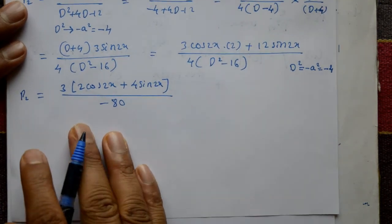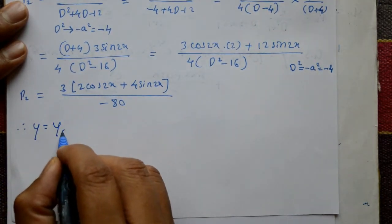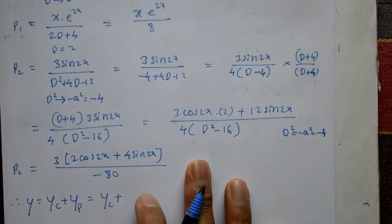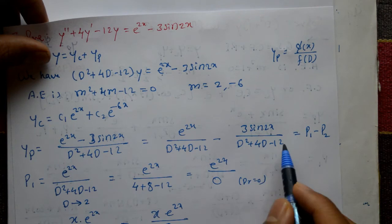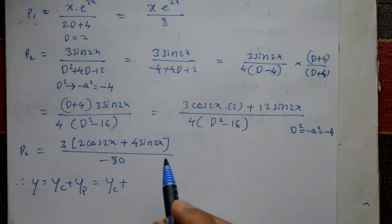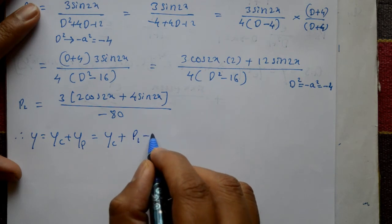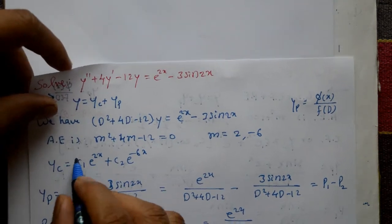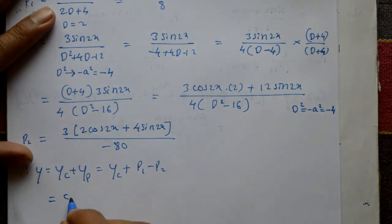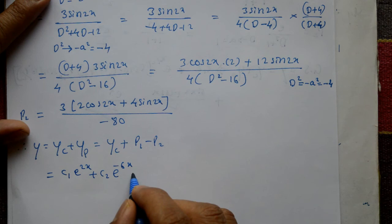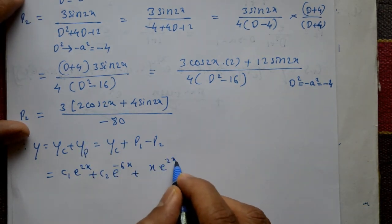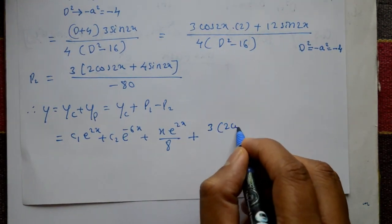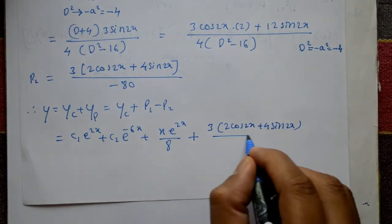Therefore, the complete solution is y = complementary function + particular integral. The particular integral is P1 - P2. So the complete solution is: y = C₁·e^(2x) + C₂·e^(-6x) + x·e^(2x)/8 - [3(2·cos(2x) + 4·sin(2x))/(-80)]. This is the required solution.